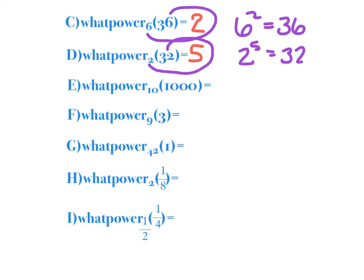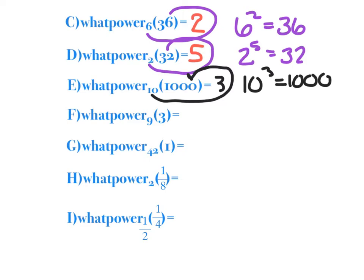I'm going to go with 3 because 10 cubed is 1,000. Now this one gets a little tricky: 9 to what is 3? 9 to the what power is 3. Well, I'm thinking I need to take the square root of it, which means the exponent is 1 half. Remember we talked about rational exponents? I want to take the square root, so I know that's a 1 half power.